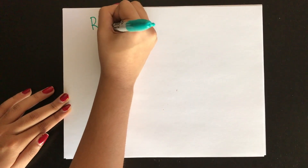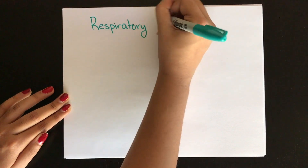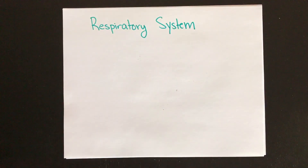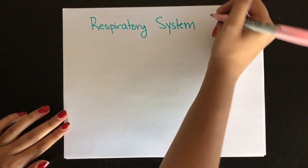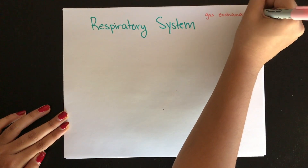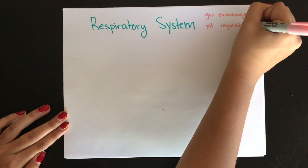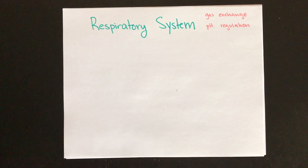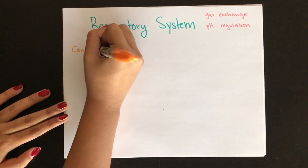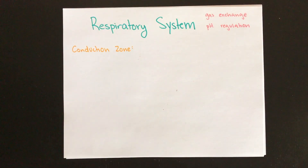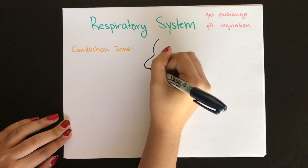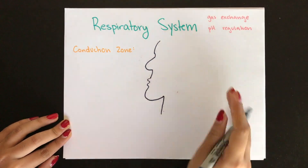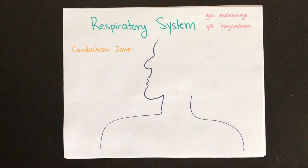Now we're going to move on to the respiratory system. The respiratory system is in charge of moving air in and out of the lungs through ventilation, exchanging gas with the blood, and facilitating the regulation of pH in the body. The first part we'll discuss is the conduction zone, which only moves air in and out of the body — no gas exchange actually occurs here.